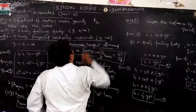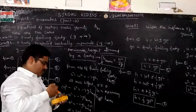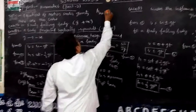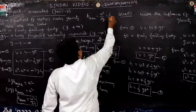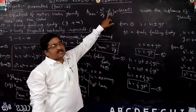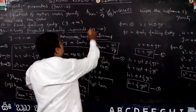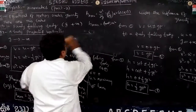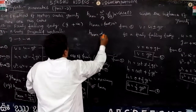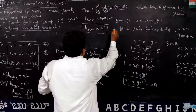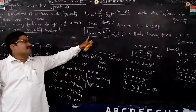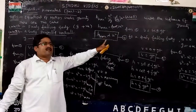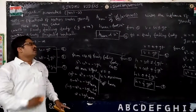Now, H_max = U²/2G means (1/2G) × U². Since 1, 2, and G are constants, 1/2G is a constant. So H_max = constant × U², which means H_max is directly proportional to U². This is equation number 10. The maximum height attained by a body is directly proportional to the square of its initial velocity.